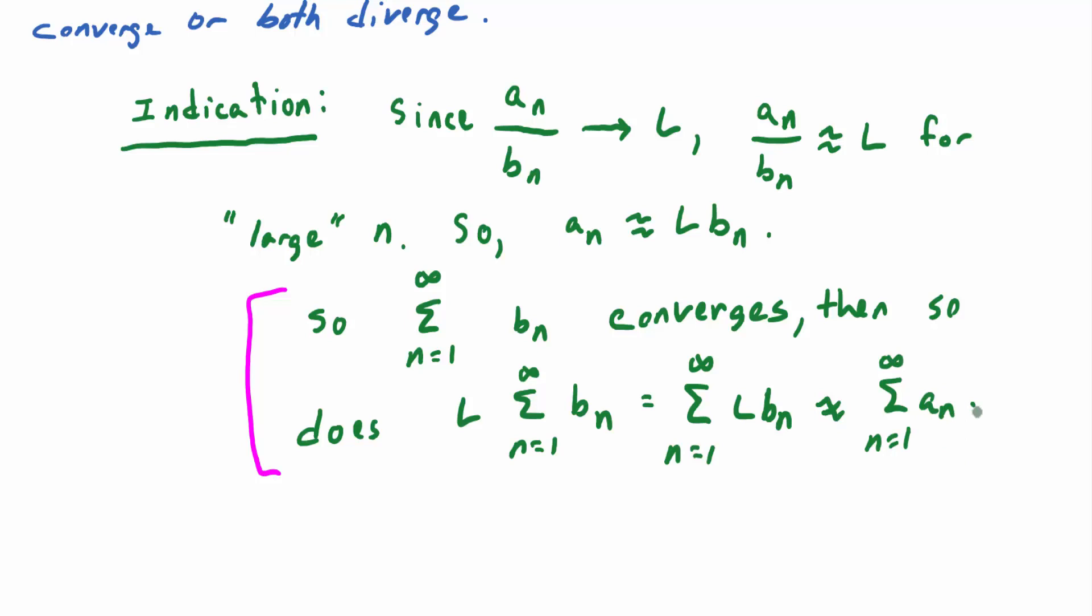So this would be equal to the sum N equals 1 to infinity of L times b_n, which is approximately the sum of the a_n. So that should hopefully make you believe it, at least for the convergence case. And then, you know, if the sum involving b_n diverges, then it's, and L is finite, it's not too hard, also, this is more of the hand-wavy part, it's not too hard to believe that the sum, since a_n is almost equal to L times b_n, it's not too hard to believe that the sum of the a_n diverges as well. Does that make sense? So all I want you guys to have is an intuitive feel for why it works.